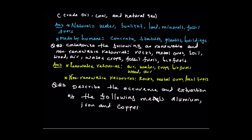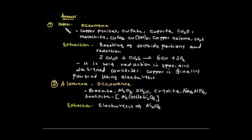Question number three: describe the occurrence and extraction of the following metals — aluminium, iron, and copper. Copper occurs as copper carbonate and copper sulfide. The chemical formula of copper sulfide is given.